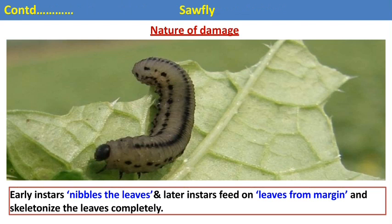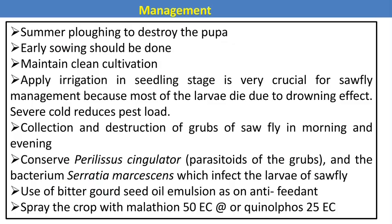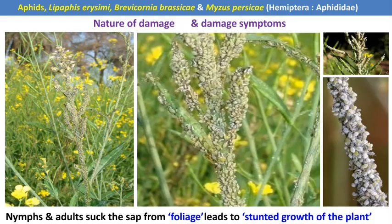The larva of the mustard sawfly only attacks the leaves and causes complete defoliation. In this picture we can see the plant is completely defoliated due to the feeding of the larva. For management: summer deep ploughing to destroy pupae, early sowing, maintain clean cultivation, apply irrigation in the seedling stage, collect and destroy grubs or larvae, conserve different natural enemies in the field, use bitter gourd seed oil emulsion as an antifeedant, and spray the crop with quinolphos or malathion.